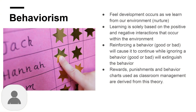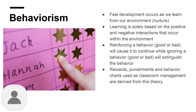Behaviorism takes a different approach, focusing entirely on how environment shapes development. This theory emphasizes learning through positive and negative interactions, suggesting that behaviors that are reinforced will continue while those that are ignored will diminish. This has led to practical applications like reward systems and behavior charts in educational settings.